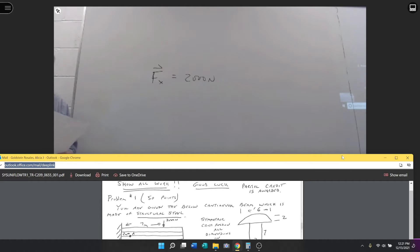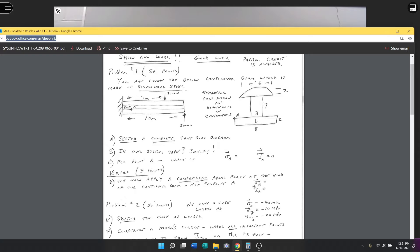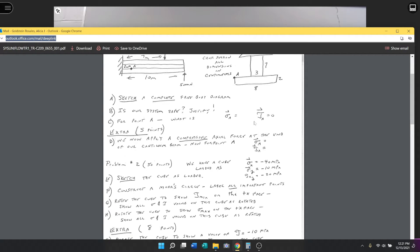For the next half of the exam, I've given you a cube that has plane stresses and shear stresses noted. I want you to sketch the cube as loaded, construct a Mohr's circle, and label all important points, primarily the six points that we've done up on the board. I then want you to rotate to show tau min on the plus x face. When you do that, show the stresses on both the plus x and the plus y face, just like we've done in class. Then rotate the cube to show sigma max on the plus x face. When you rotate the cube, show all the stress values on the plus x and plus y face.